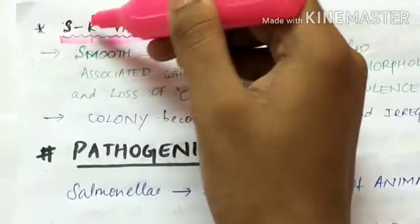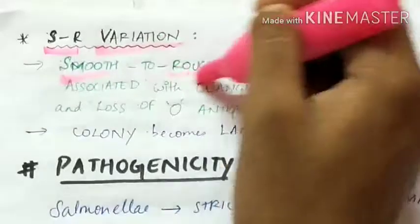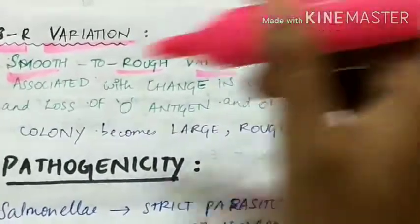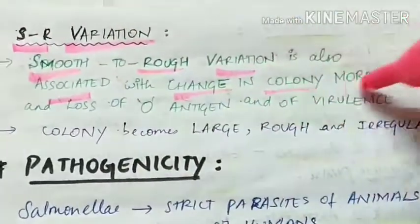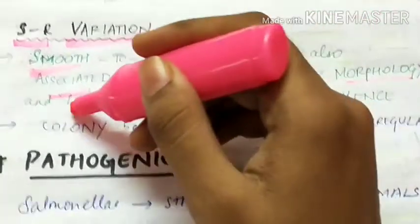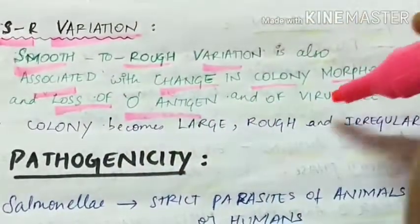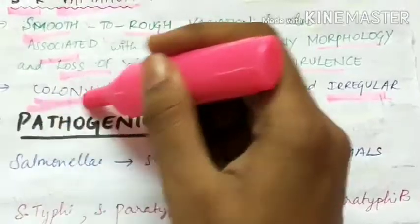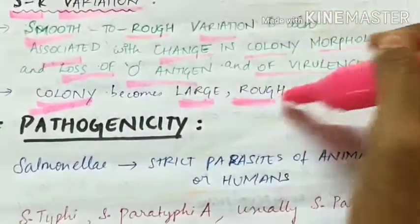The last type of variation is SR variation. SR stands for smooth to rough. Smooth to rough variation is also associated with change in colony morphology and loss of O antigen and loss of virulence. The colony becomes large, rough, and irregular.